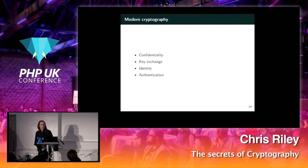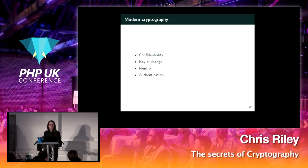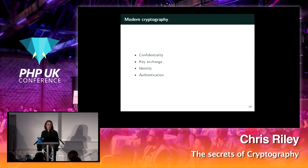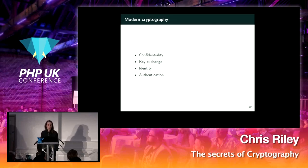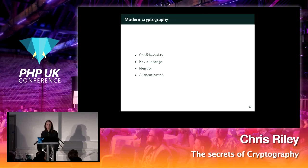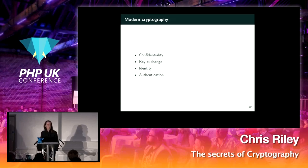Another thing we need to do is authenticate a message — make sure it hasn't been tampered with. For this, we use cryptographic hash functions such as SHA-256. When you receive a message, you can compute the message hash and compare it to one sent along with the message, signed with the sender's private key. If it doesn't match, you can reject the message. Obviously, you need to combine that hash with a secret key of some form, otherwise someone who tampered with it could just recompute the hash.